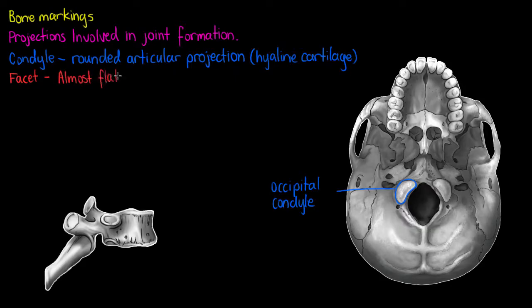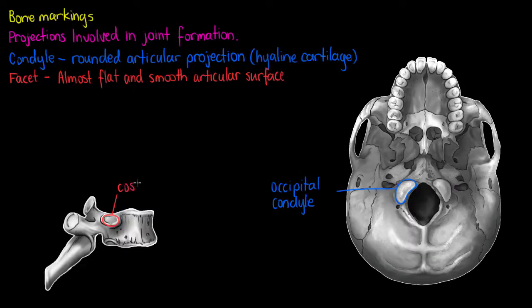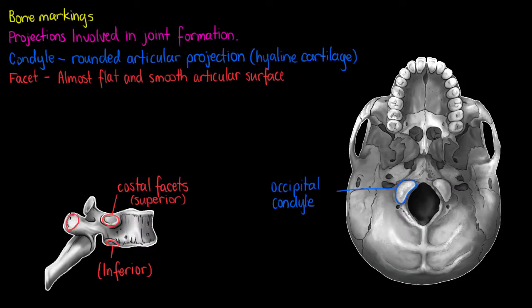The next bone marking we're going to look at is called a facet. A facet is an almost flat, quite smooth surface of articulation. If we look at the vertebrae here, we can see a couple of facets — they're all called costal facets. As the name suggests, they are all going to be involved in formation of joints with the ribs. Their naming is based on their position: we have superior, inferior underneath the vertebrae, and on the side we can also see one last facet called the transverse costal facet. So once again, all involved in joint formation with the ribs.